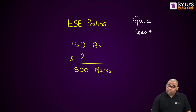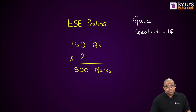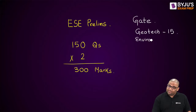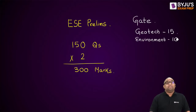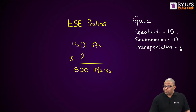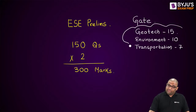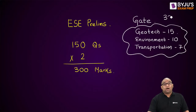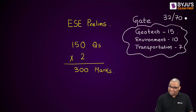In GATE, geotech has a weightage of around 15 marks. Environmental engineering has a weightage of 10 marks, and even transportation has a weightage of about 7 marks. Combining these three, it makes around 32 marks out of 70 — almost 50% of your civil engineering marks in GATE.